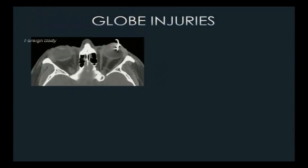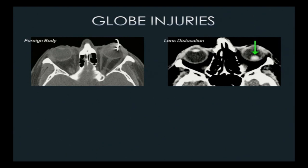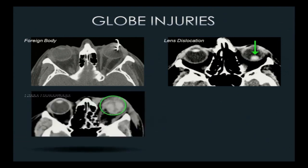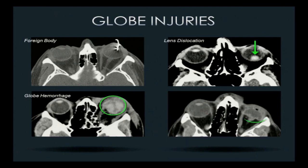Looking at soft tissues and the globe, we can identify foreign bodies — some obvious, some harder to appreciate clinically. High-energy objects can penetrate the globe with almost no telltale clinical signs, leaving a BB or metal fragment deeper in the globe. You can dislocate the lens if the zonular fibers are torn, and it will fall with gravity on a supine patient. Hemorrhage within the globe appears as high attenuation. Globe rupture has the characteristic flat tire sign or mushroom sign — intraocular pressure is slightly higher than intraorbital pressure, so vitreous humor tends to escape, collapsing the globe.